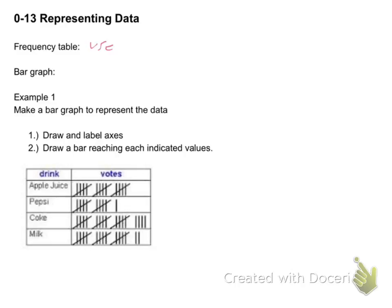So it uses tallies, or tally marks, to display frequency, which, we don't want to use frequency, to display number of times something's used.